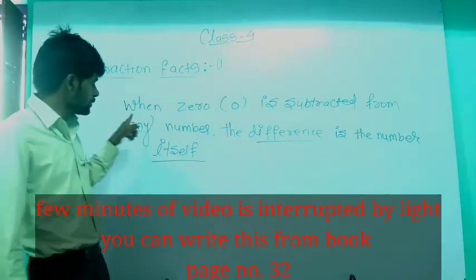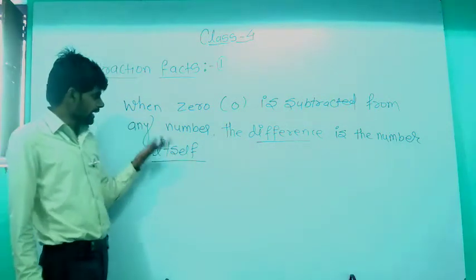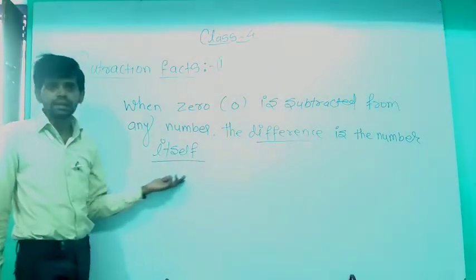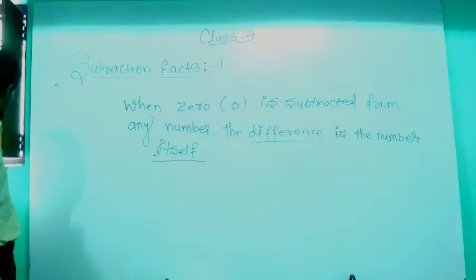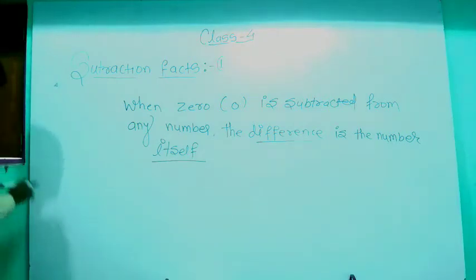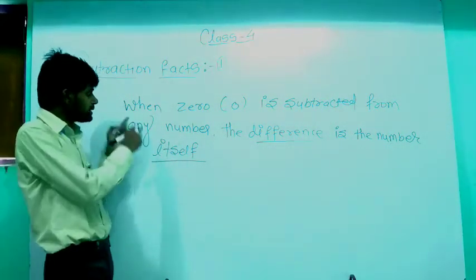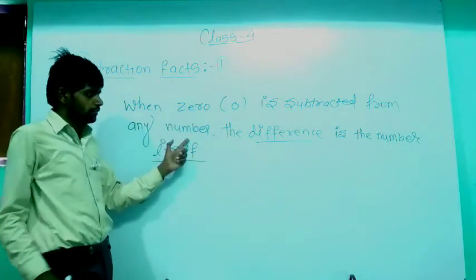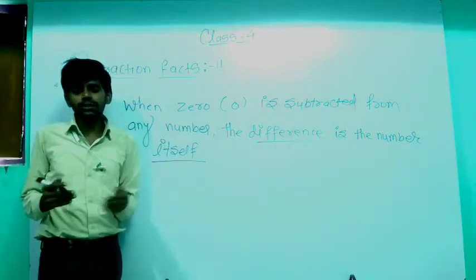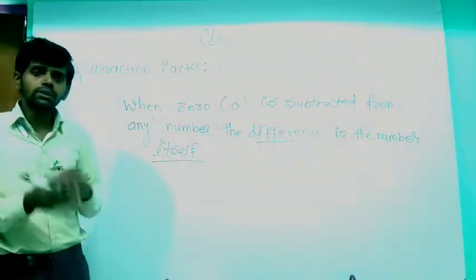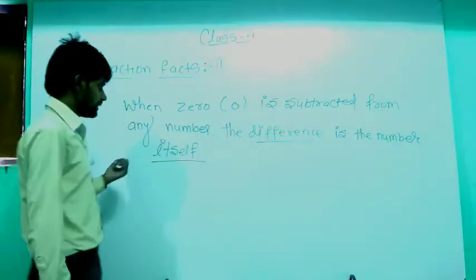What is the first property of subtraction? When 0 is subtracted from any number, the difference is the number itself. If you subtract 0 from any number, the answer — the difference — will be that same number again.